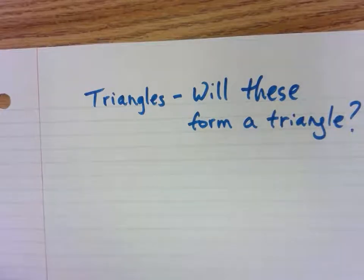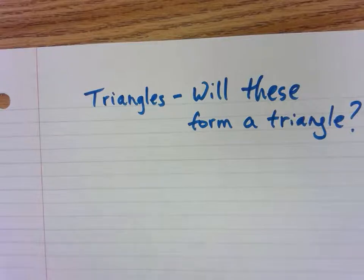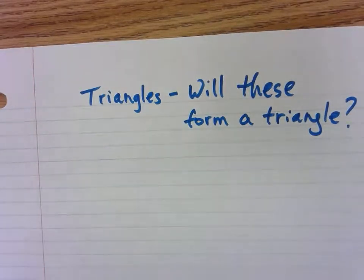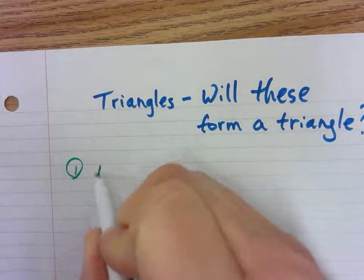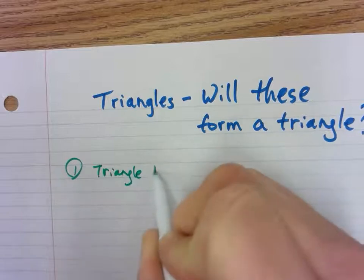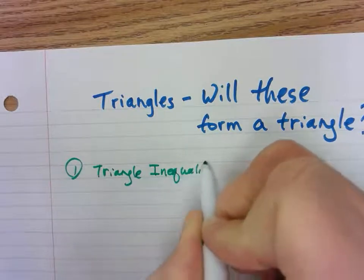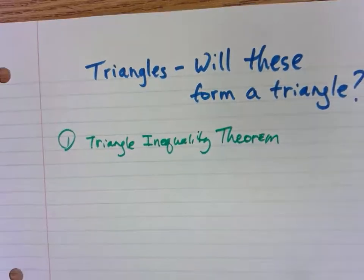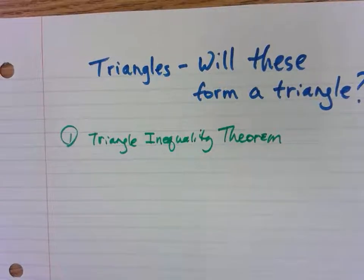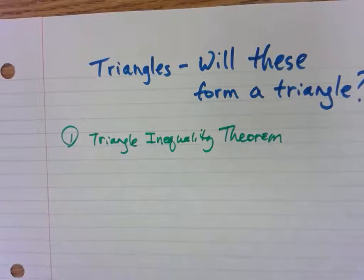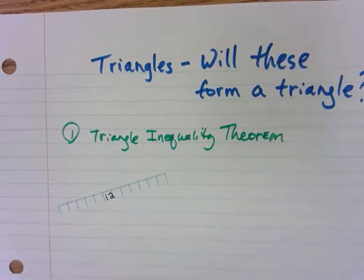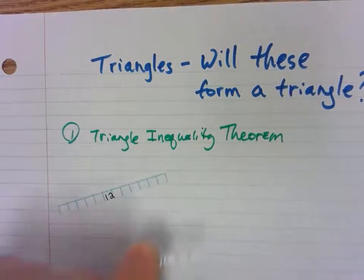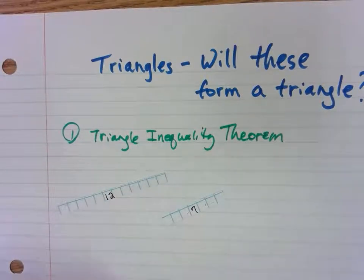All right, today we're going to talk about whether these will form a triangle. The concept we're going to be talking about is called the Triangle Inequality Theorem. So let's say you had a piece that was twelve centimeters long, a piece that was seven centimeters long, and a piece that was three centimeters long.